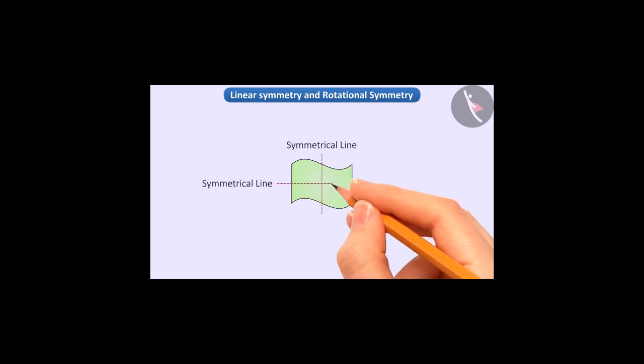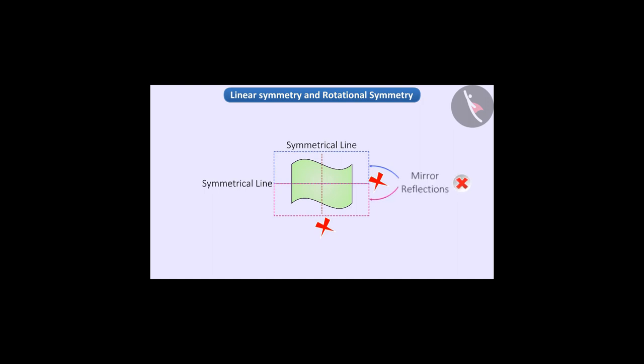Now look at this shape and tell whether it has linear symmetry and rotational symmetry or not. In this shape, we cannot draw a symmetrical line in any way so that we get two parts of the shape which are mirror reflections of each other. In this way, we can say that the figure does not have linear symmetry.